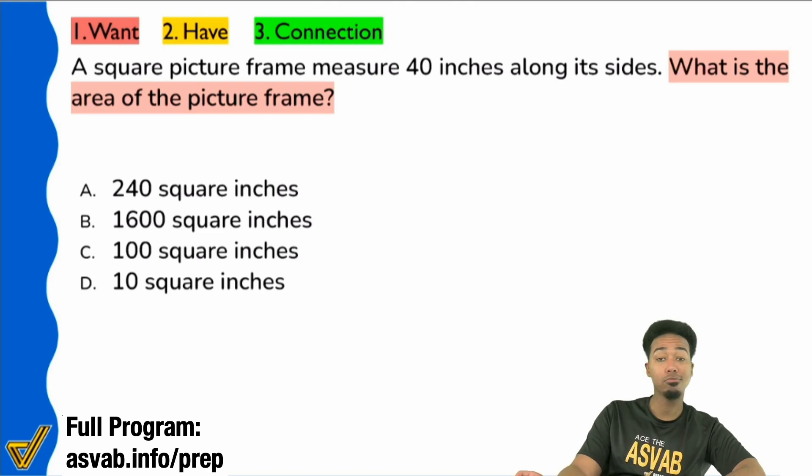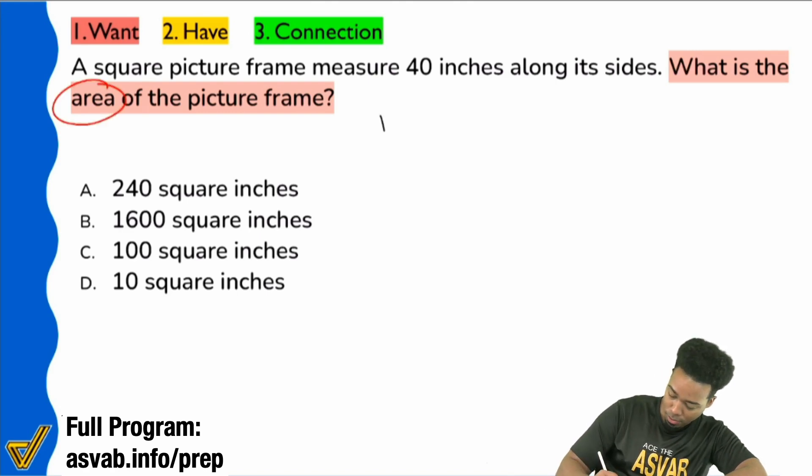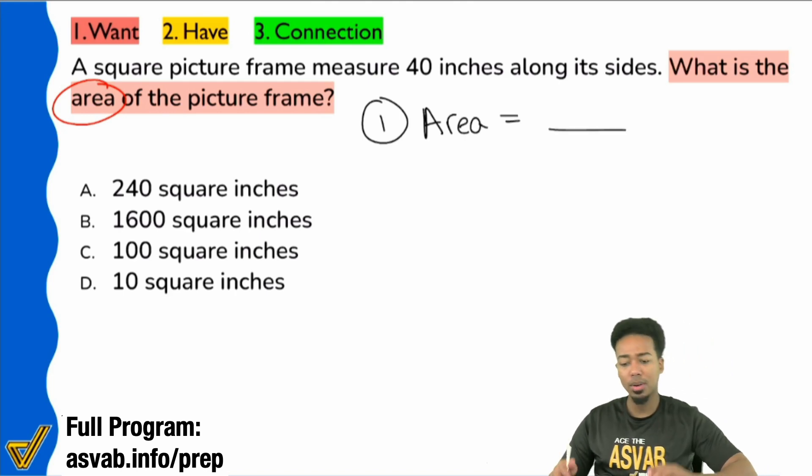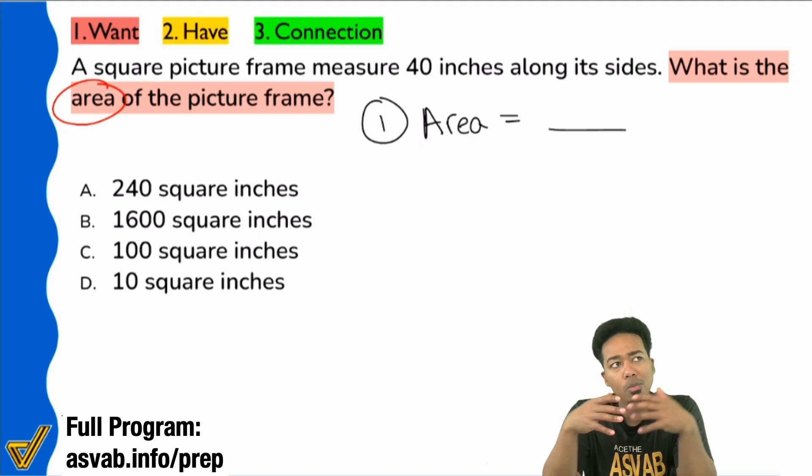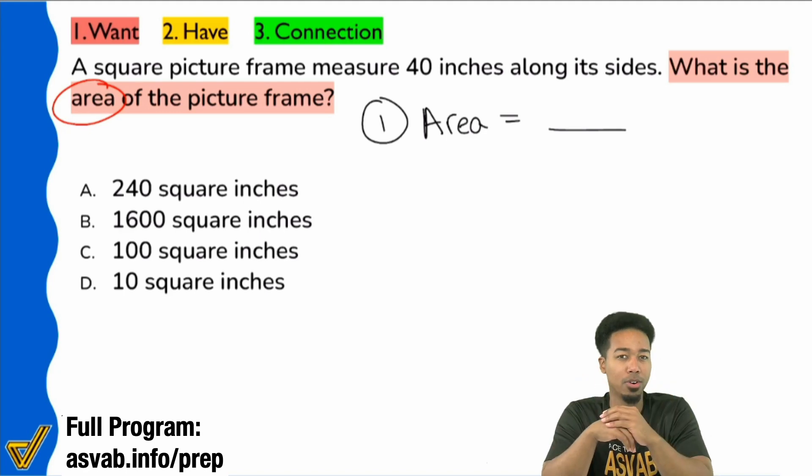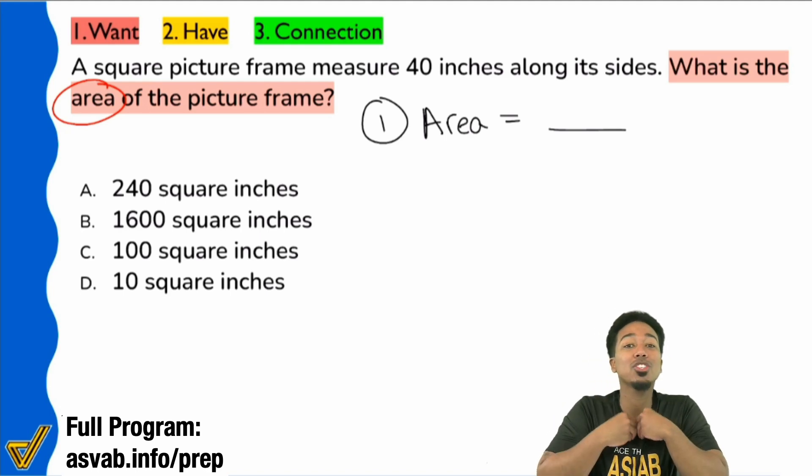Sounds good. Cool. Perfect. Alright, so with that, we're looking for the area of the picture frame, and all I know for sure is that I'm looking for the area. So right there, area equals blank. Now, everybody, quick question. The moment that I see such a specific math word like area, what's the next question I want to ask myself immediately? Area, hmm, there might be a formula, but I can't tell what formula to use unless I know, thank you Deja, what the shape is.